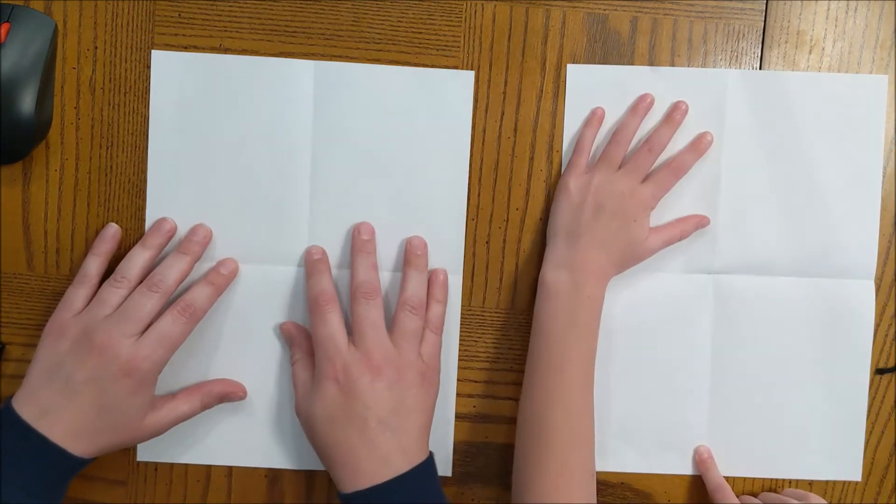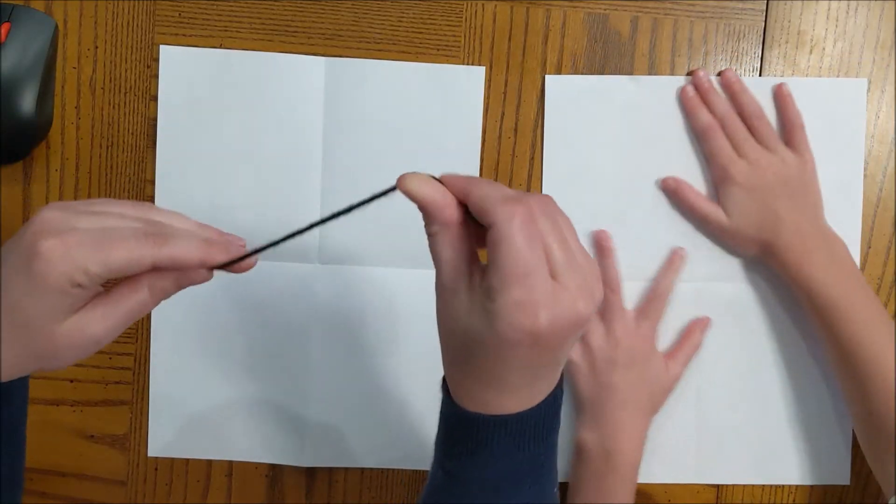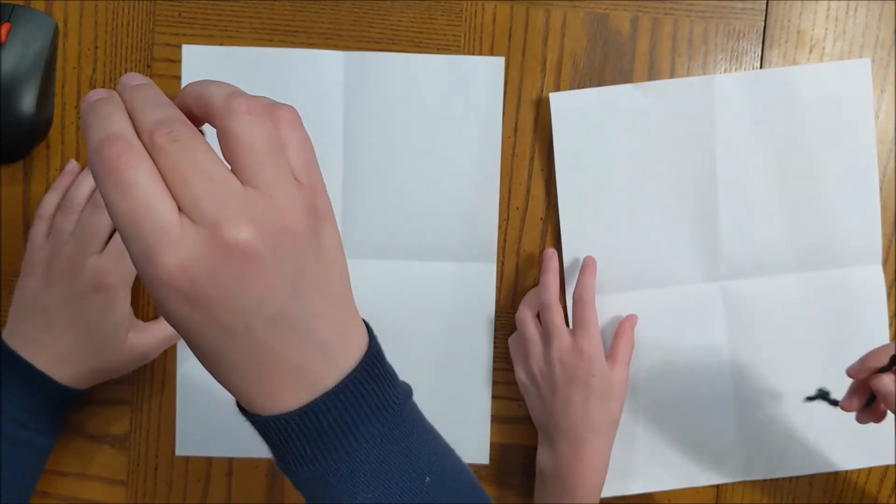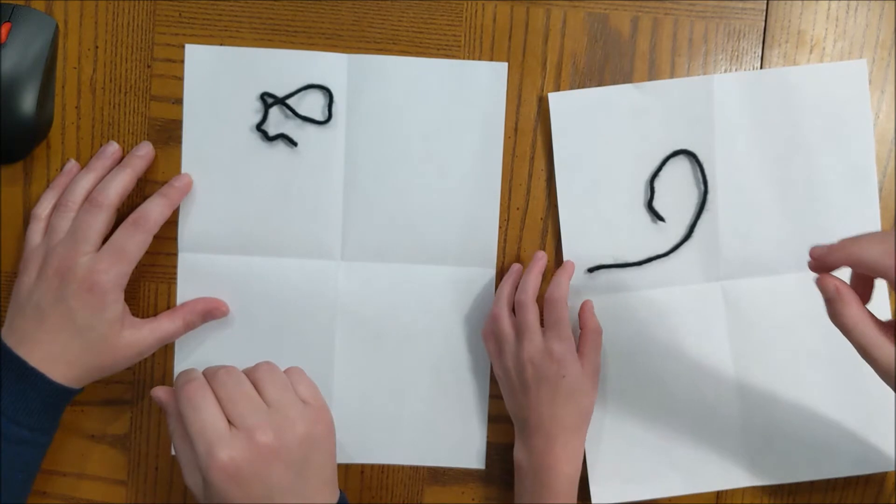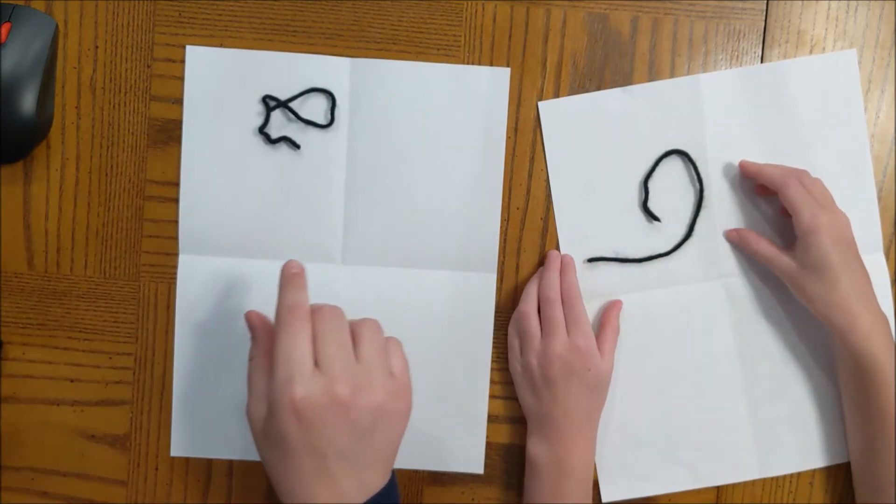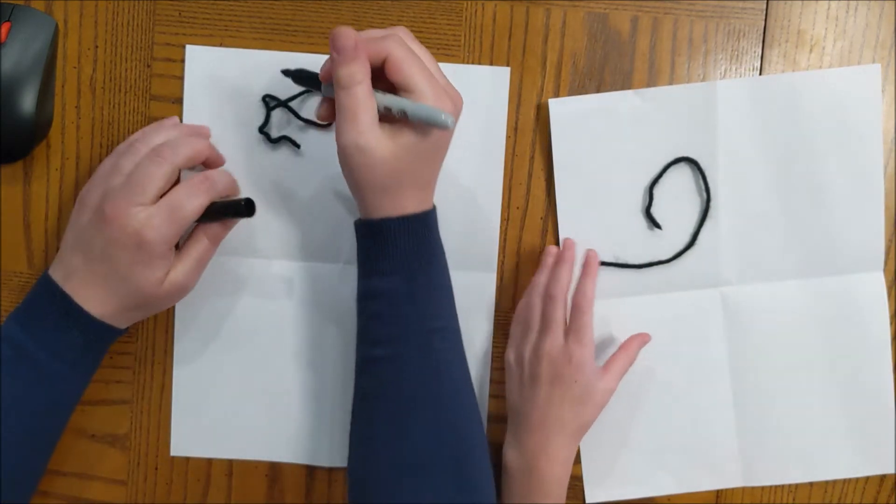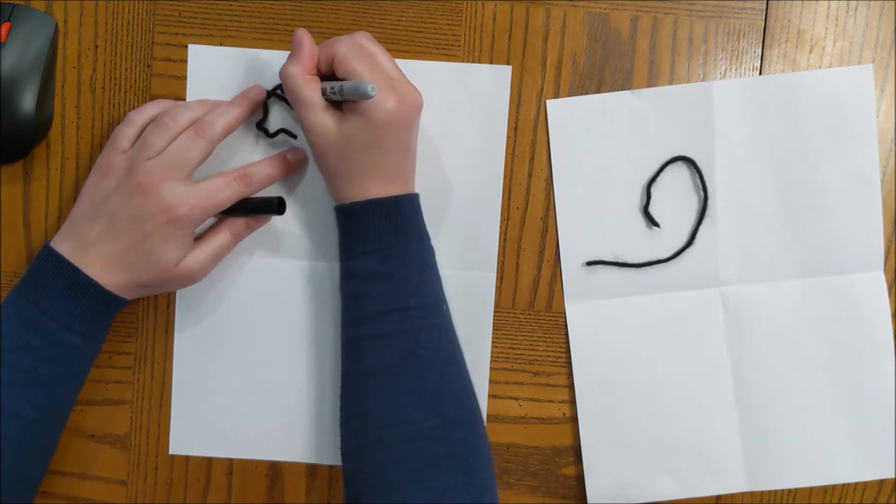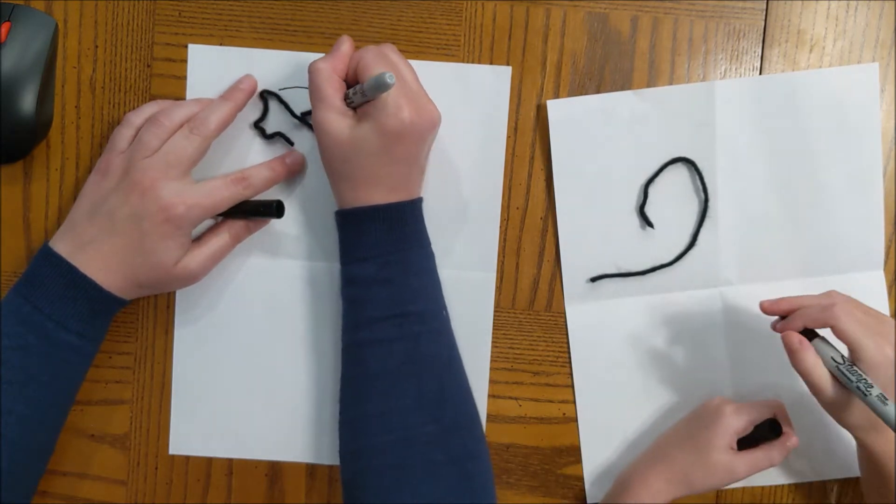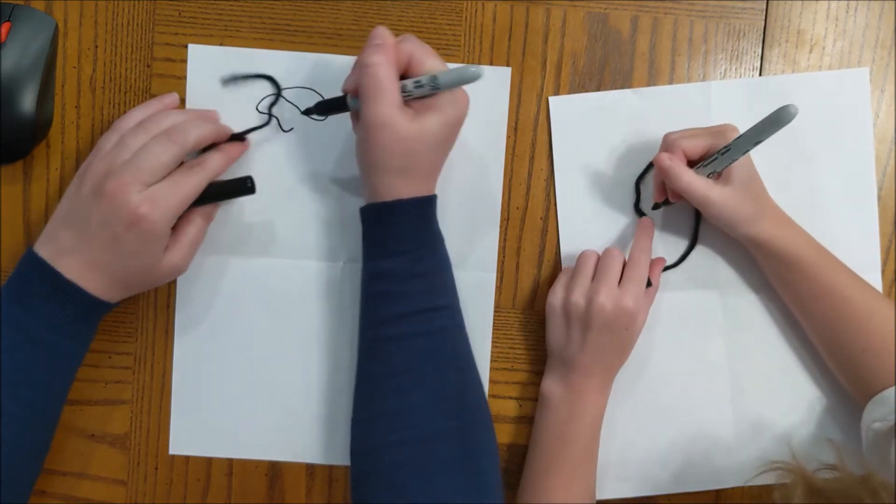Now for this version, we're going to use the string, and we're going to drop it in that section to create a squiggle. Now I'm going to take my marker and I'm going to redraw that squiggle the way that it was.